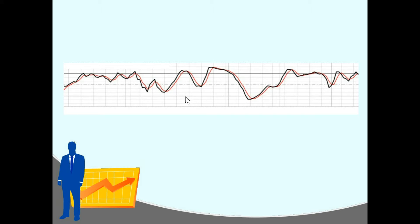The line at 20 represents oversold — so if the black line goes below 20, that means the stock is possibly cheap and worth buying, because you want to buy at a low price. The line at 80 represents overbought — if the black line goes above 80, the stock might be expensive, so you might not want to buy it.